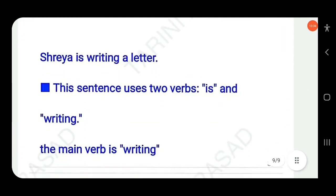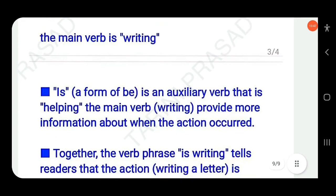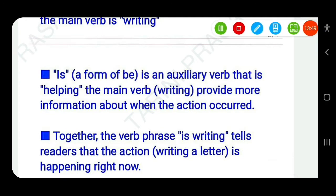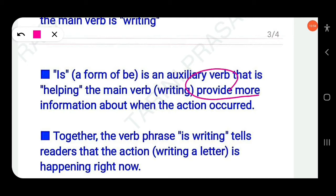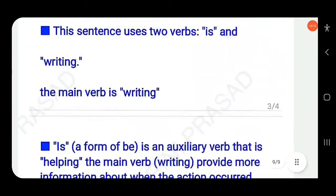A clear example: 'Shreya is writing a letter.' This sentence uses two verbs — 'is' (auxiliary/helping verb) and 'writing' (main verb). Together, the verb phrase 'is writing' tells the reader that the action is happening right now. In 'she has been working all day', the verb phrase is 'has been working' — 'working' is the main word and 'has' and 'been' are auxiliaries.